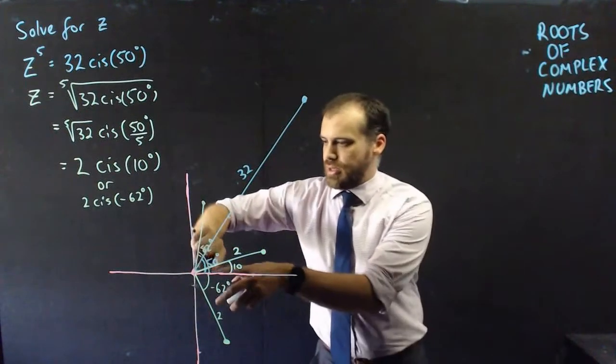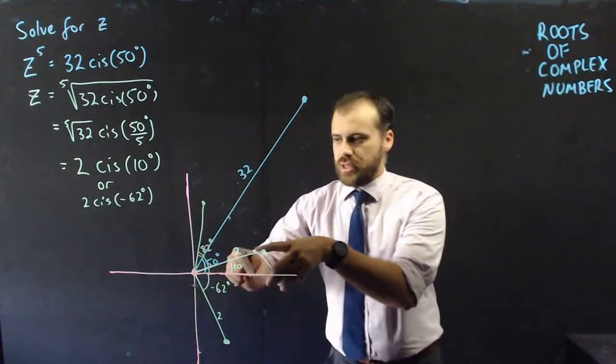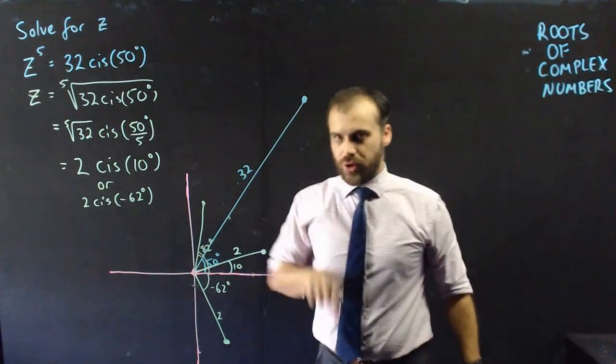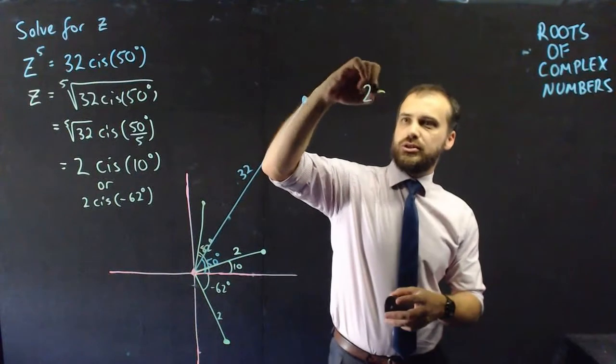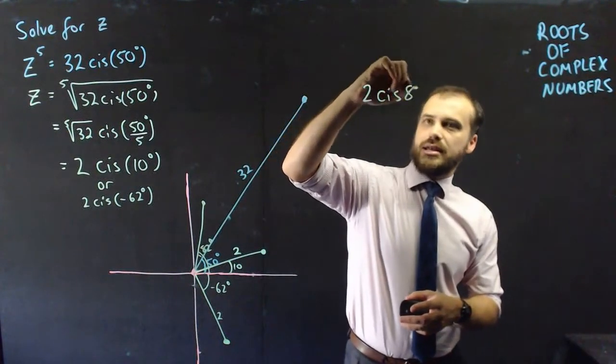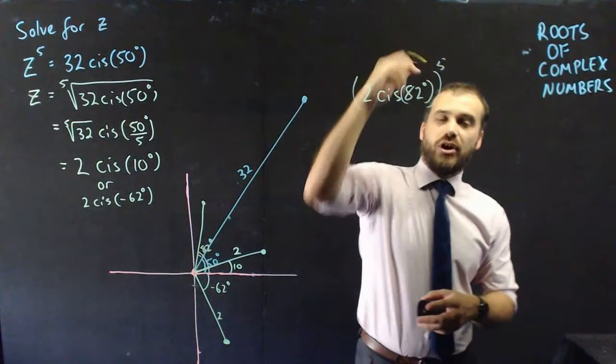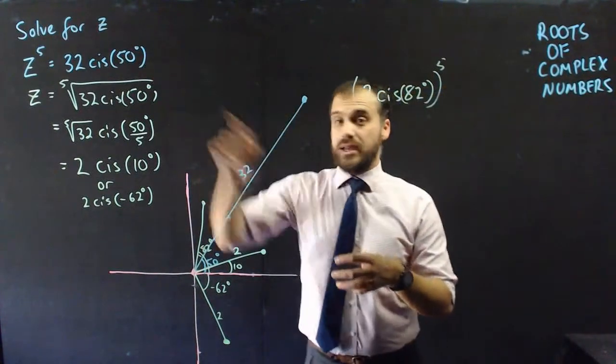A fifth of 410 is 82, and that is my third solution. It's right here: 82 degrees, a length of two. And you can test it out. 82, 164, etc., and you'll get right there. You can also try it out by putting the number 2 cis 82 to the power of five, and I bet you'll get that answer.